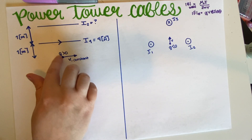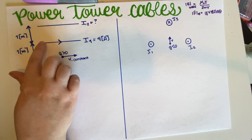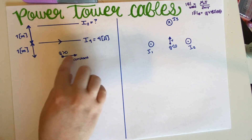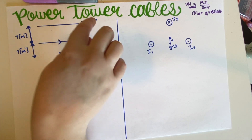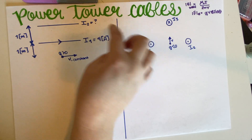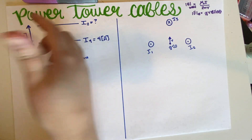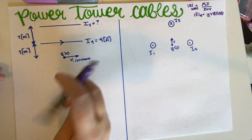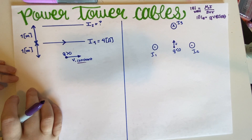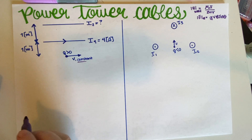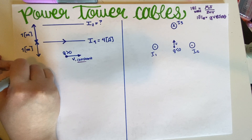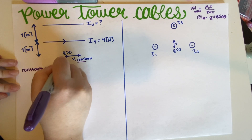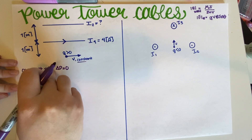We have a positive charge moving to the right, and we also have a wire with a current of 4 amps moving to the right as well. The velocity of the charge is constant, which is pretty important — this is the key trick to this problem. If you remember from 7B, constant velocity and no change in mass means that Δp is equal to zero.